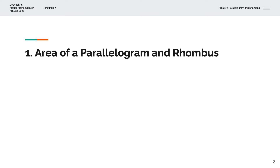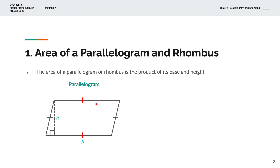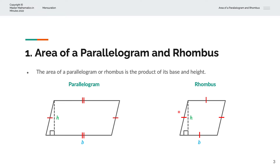So what is the area of a parallelogram and rhombus? The area of a parallelogram or rhombus is the product of its base and height. We'll consider this visually. Here we have a parallelogram with a base of b and a height of h, where these two pairs of sides are parallel. And we have a rhombus to the right — a rhombus is a special case of a parallelogram where each of the four sides are equal in length, also with base b and height h. The area is A = b × h.